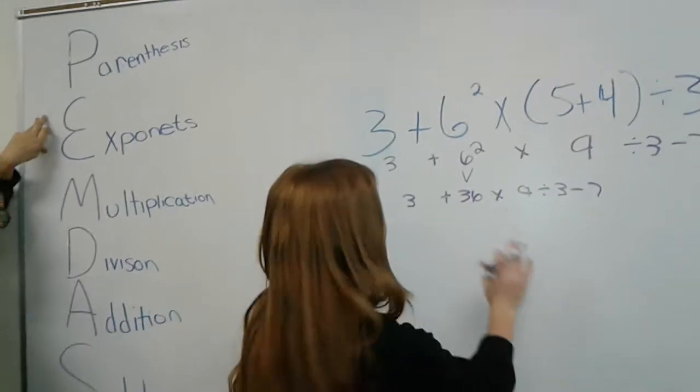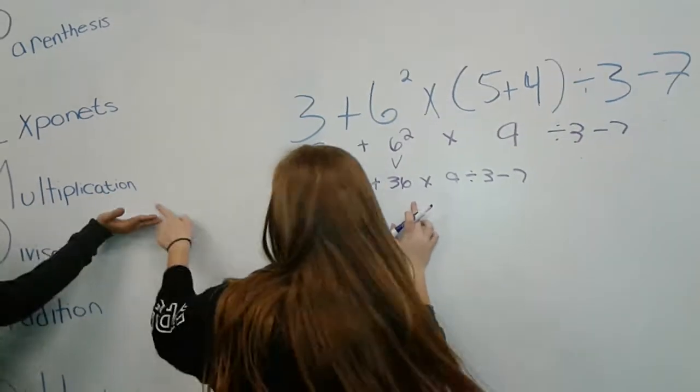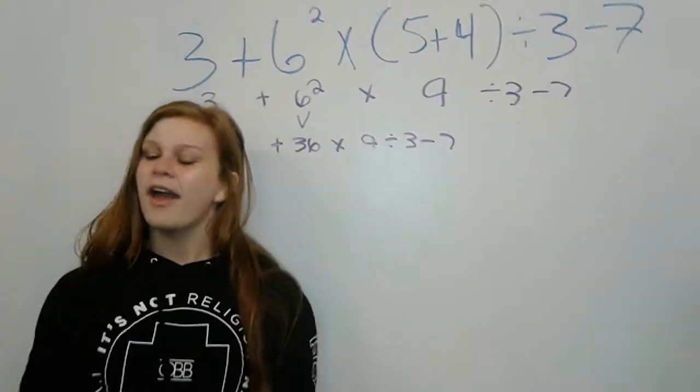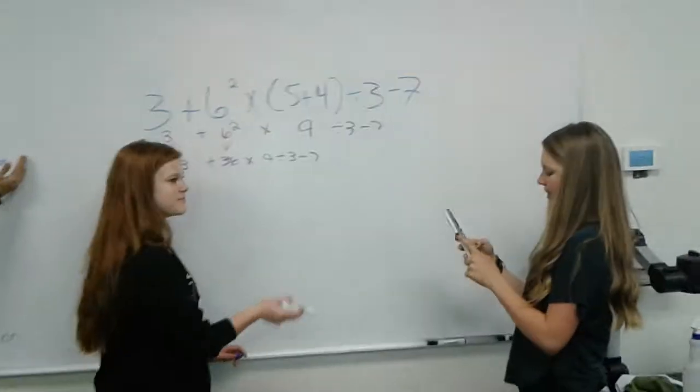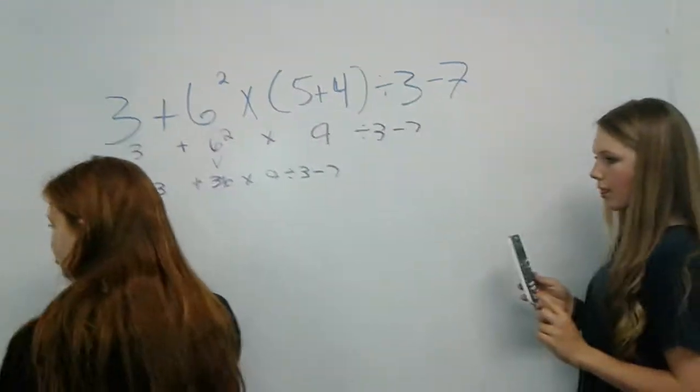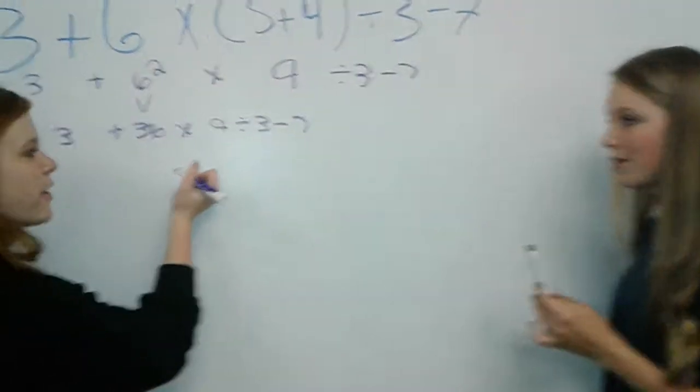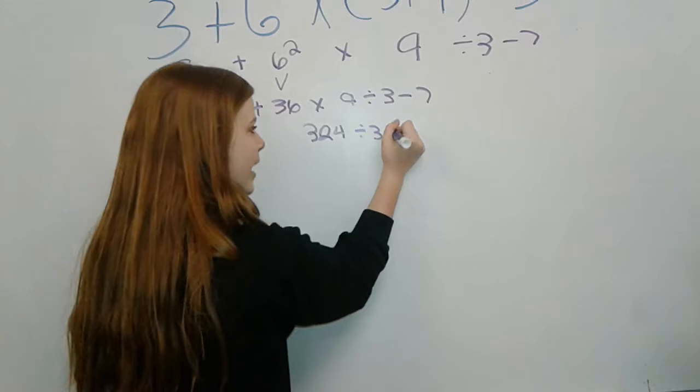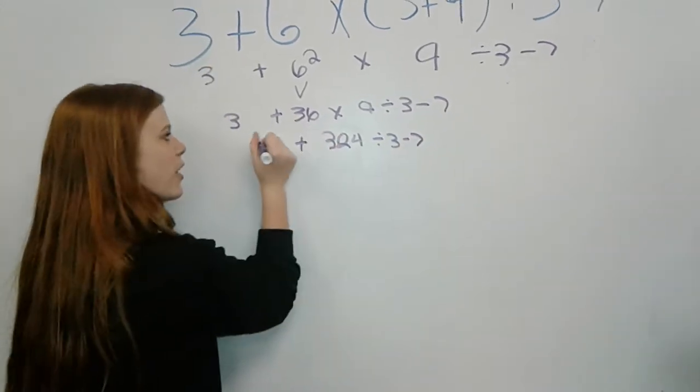Next, multiplication. 36 times 9. Where's my calculator? 36 times 9 equals... 36 times 9 is 324. 324 divided by 3 minus 7 plus 3.